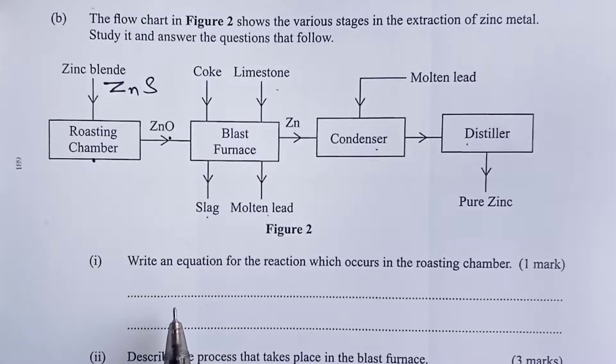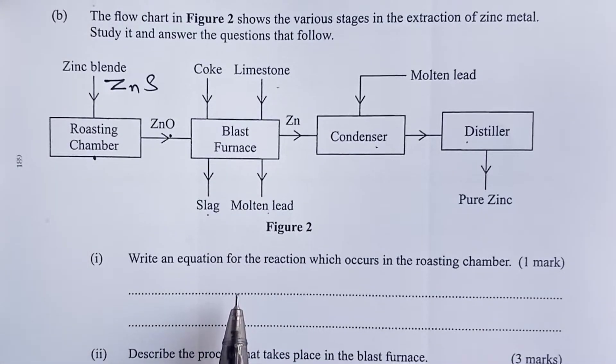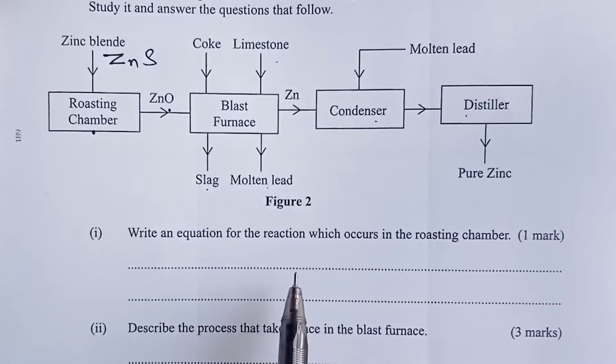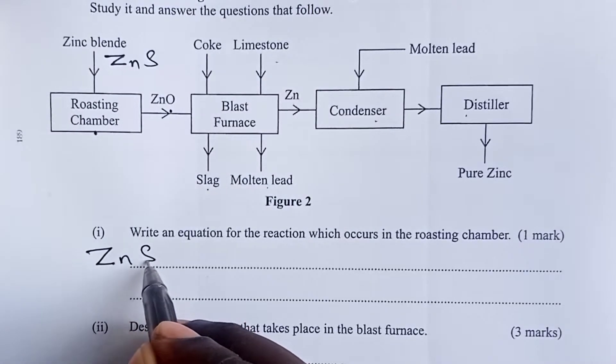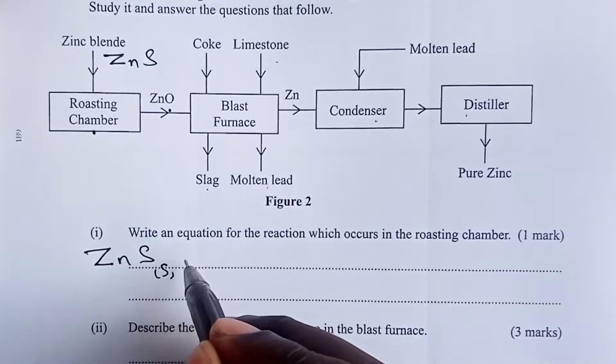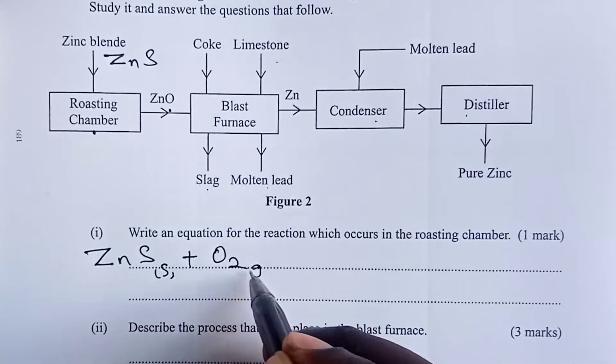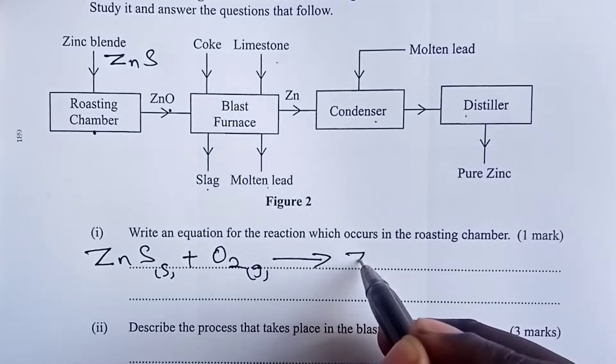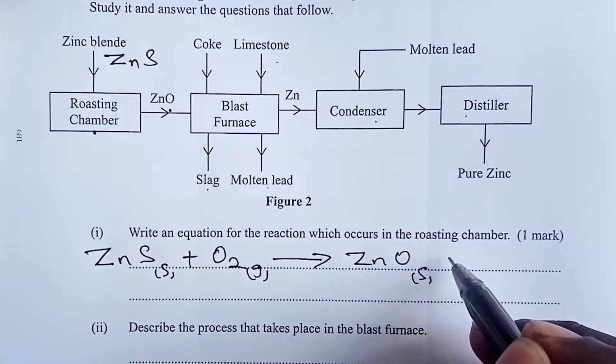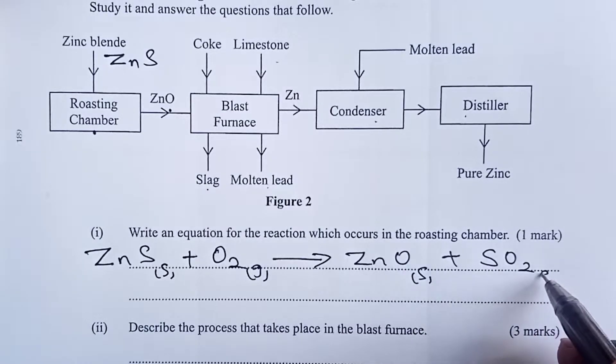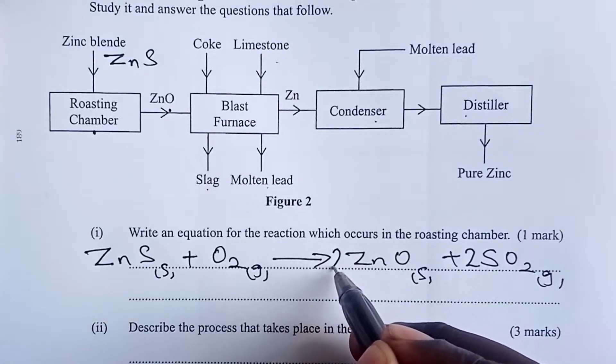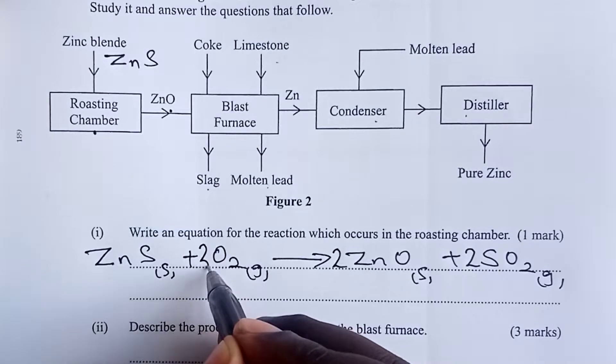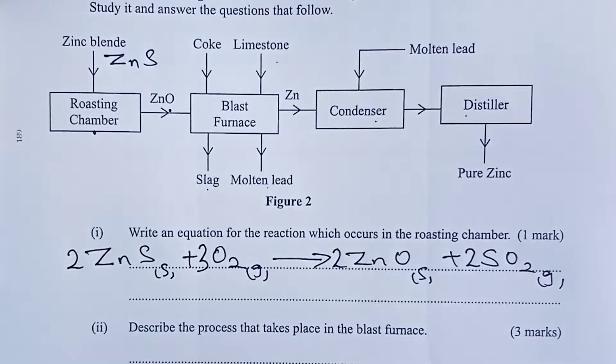The first question is asking us to write an equation for the reaction which occurs in the roasting chamber. We are burning our zinc blend in excess oxygen and we are able to get our zinc oxide and some sulfur-4-oxide gas. We balance with a 2 on sulfur, a 2 on zinc oxide, a 3 on oxygen and another 2 on zinc oxide.